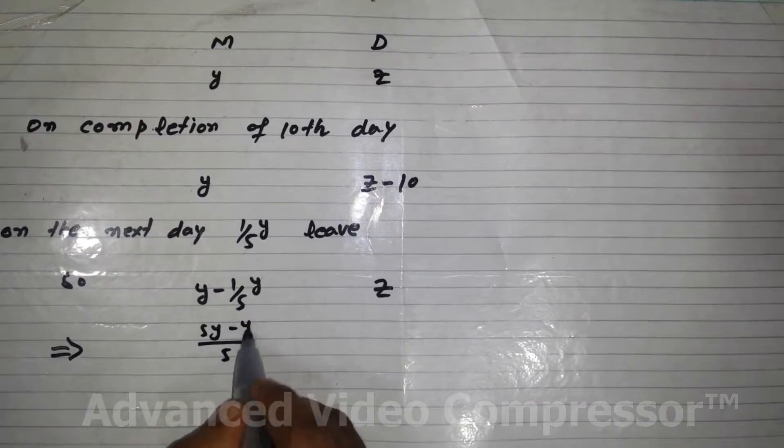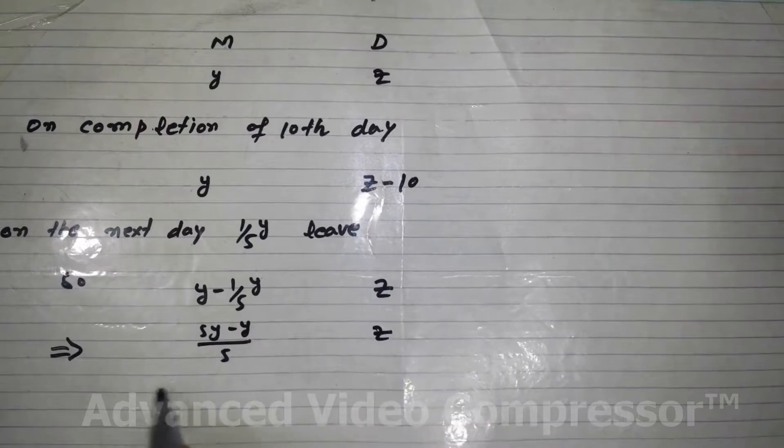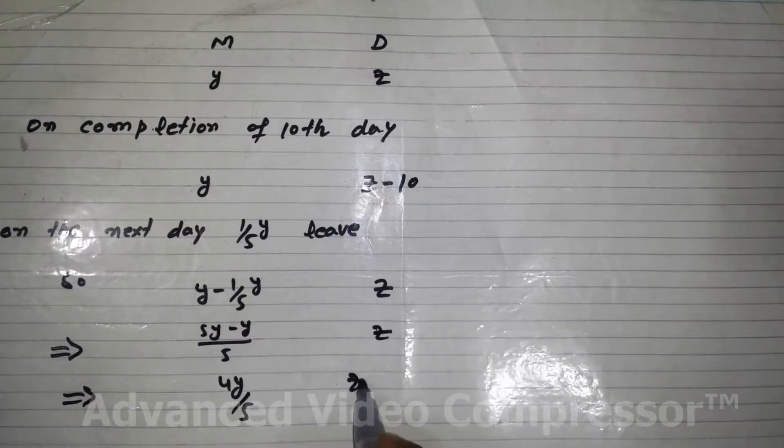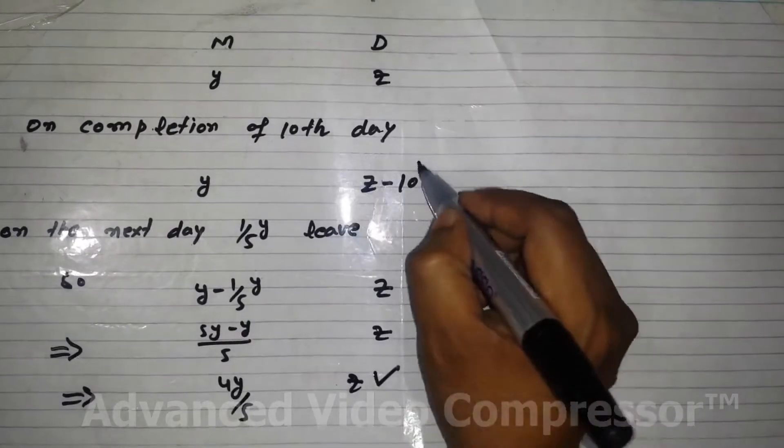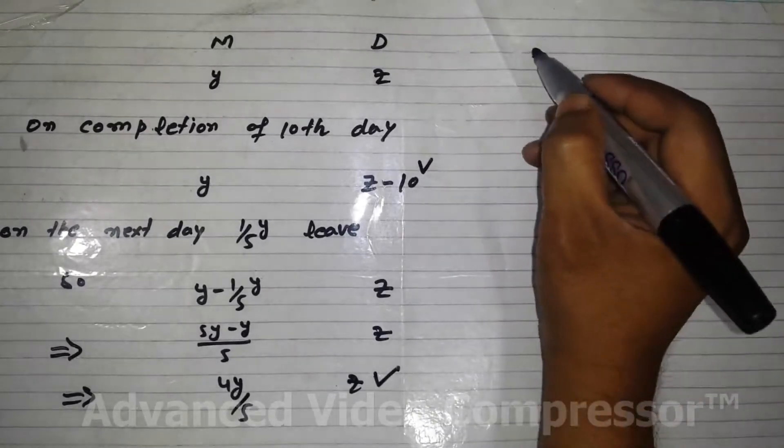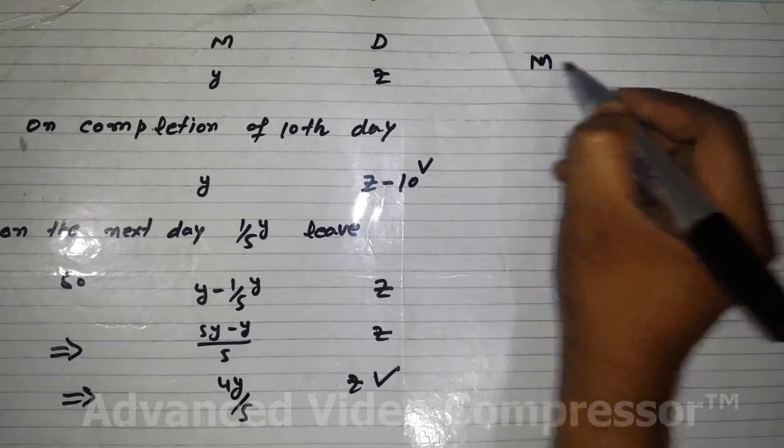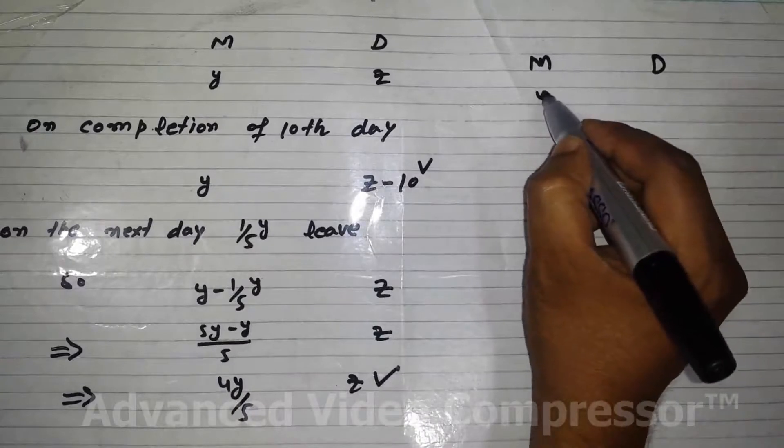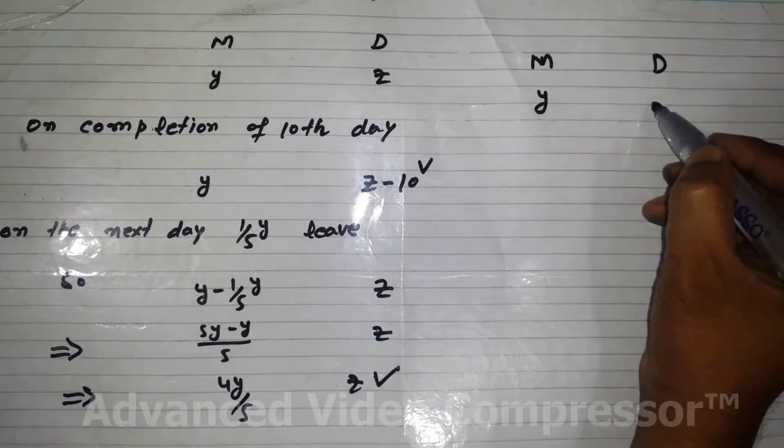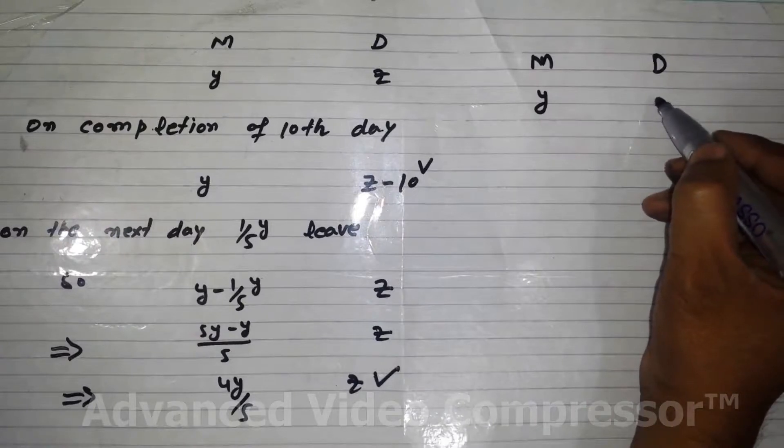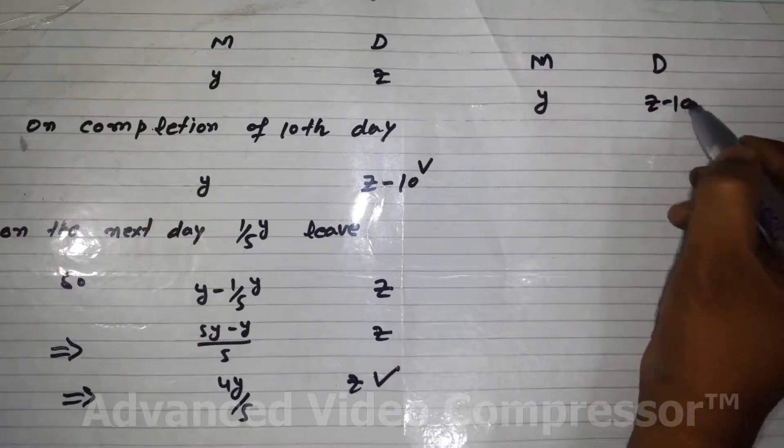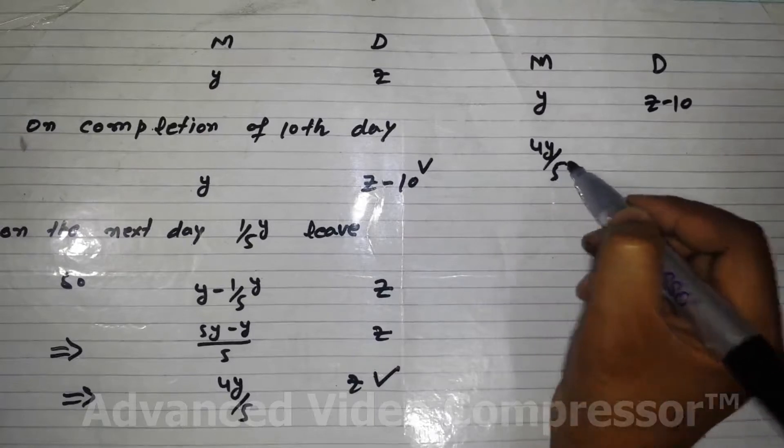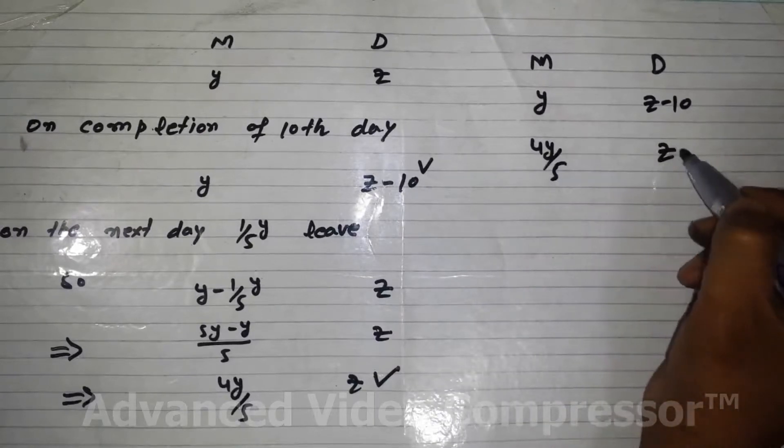Now we simplify this data. We take LCM here 5, multiply 5Y, then it gives us 4Y over 5. So we rewrite this: men initially Y, and on the 10th day when it completes, days left are Z minus 10. But next day the men left are 4Y over 5, and days were again Z.